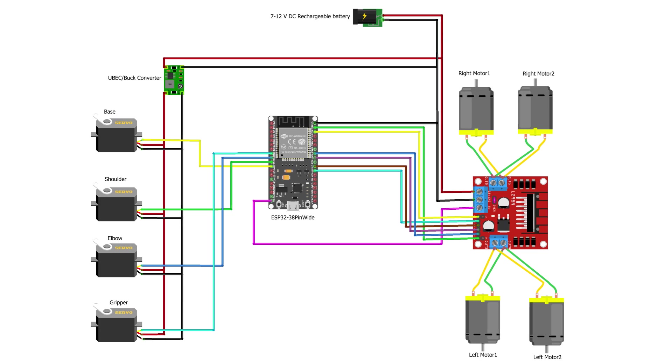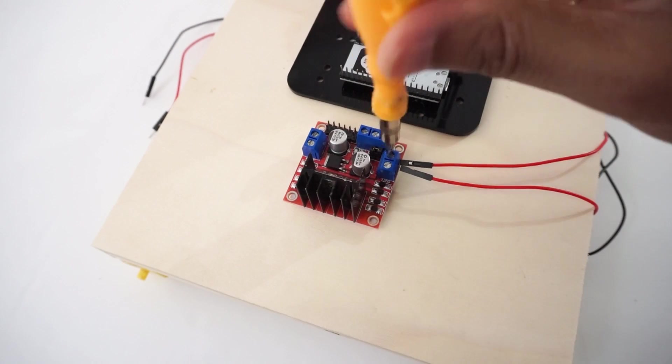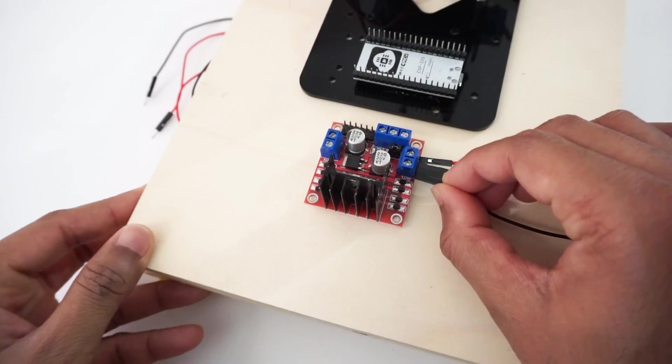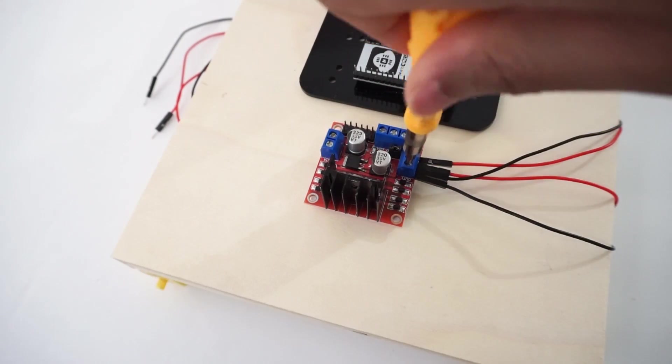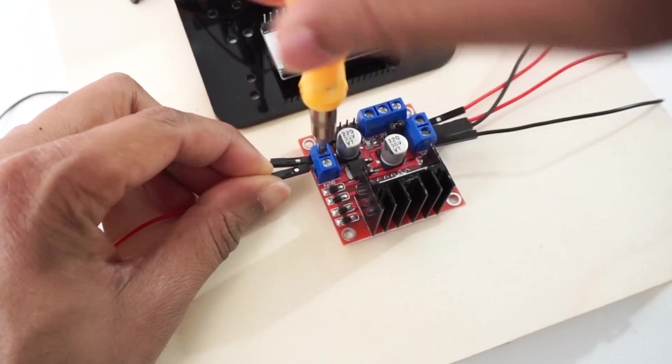Now, let's make a connection as per circuit diagram. Connect right side motors to OUT1 and OUT2 pins of L298N motor driver module. Now, connect left side motors to OUT3 and OUT4 pins of motor driver module.